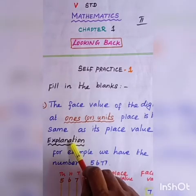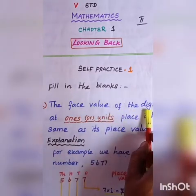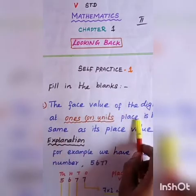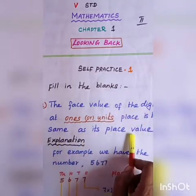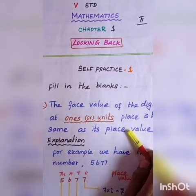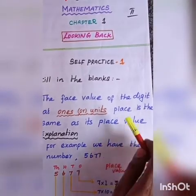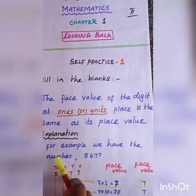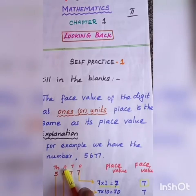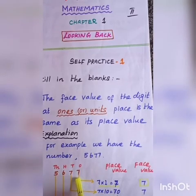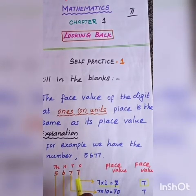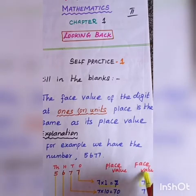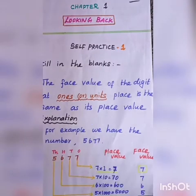Next: the face value of a digit at that place is the same as its place value — that's why we call it a digit. Here's the explanation about face value and place value. Find out the face value and place value.